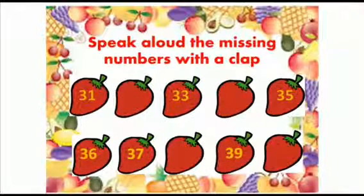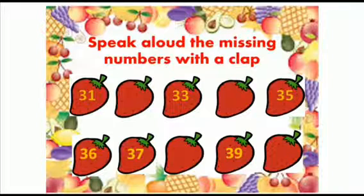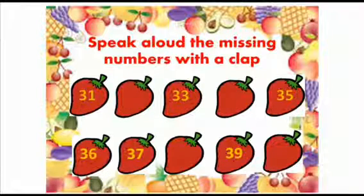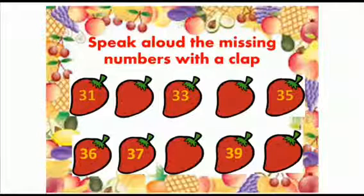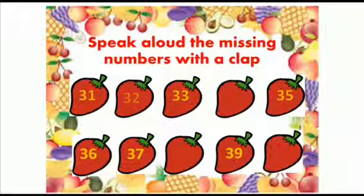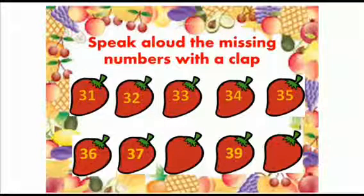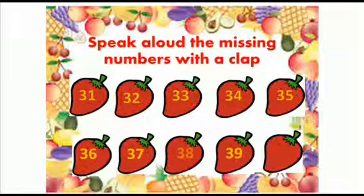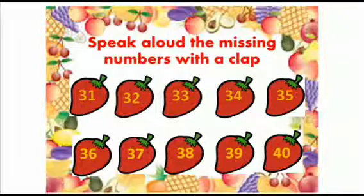Oh, wow! Some red tasty strawberries are given to you. Here, the counting is starting from 31. You have to speak aloud to find out the missing numbers with a clap. Let's start. 31, 32, 33, 34, 35, 36, 37, 38, 39 and 40. Very good.